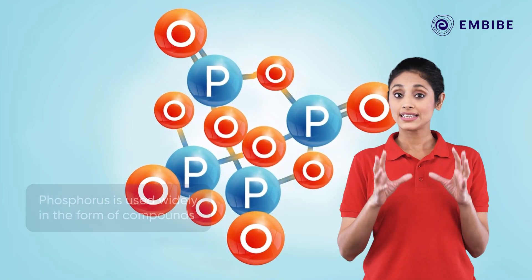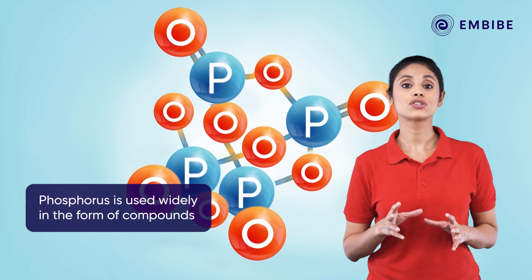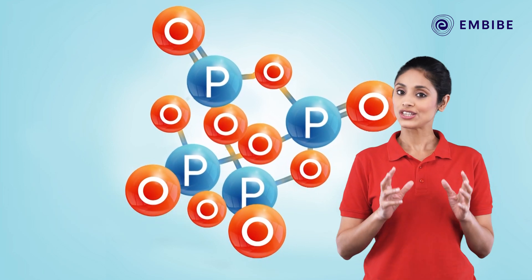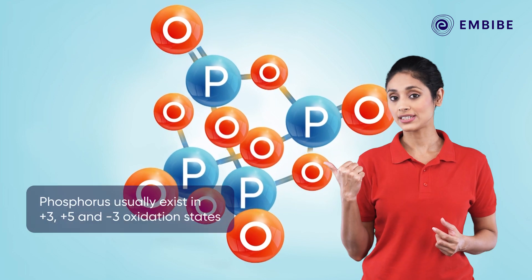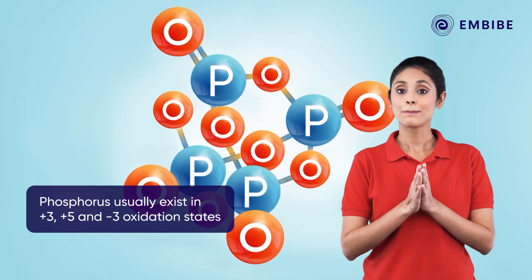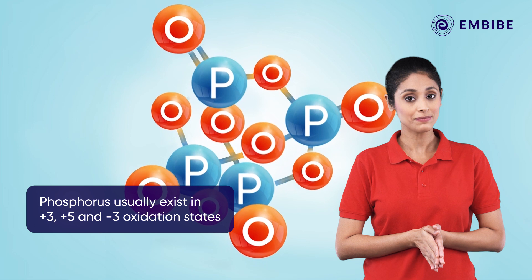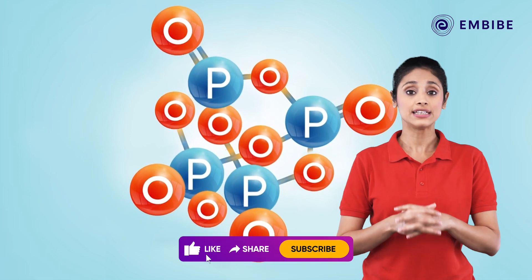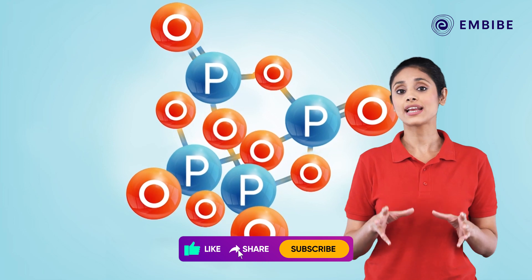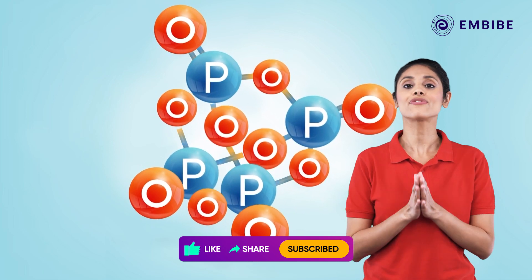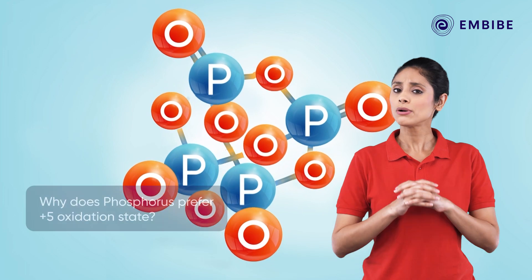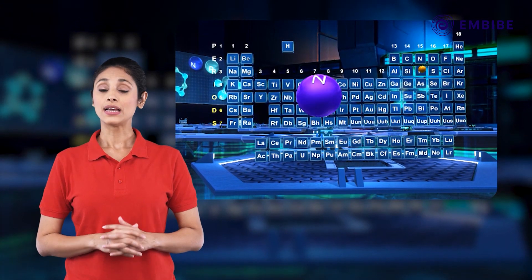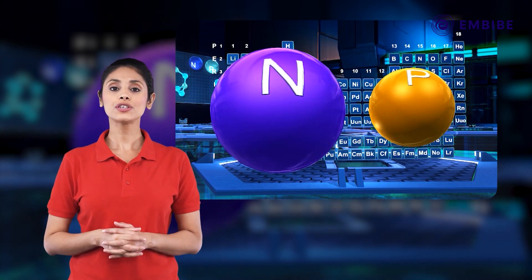Hello everyone, did you know that phosphorus is used almost entirely in the form of compounds, usually in the oxidation states of +3, +5, and -3? Unlike nitrogen and various other elements, phosphorus tends to exhibit a preference for the +5 oxidation state. But why is it so? Come, let's find out.